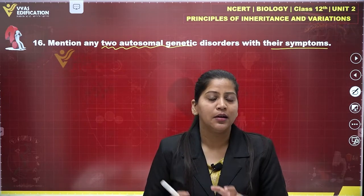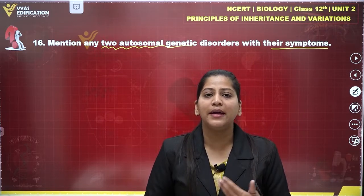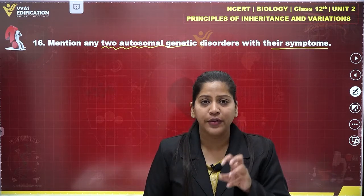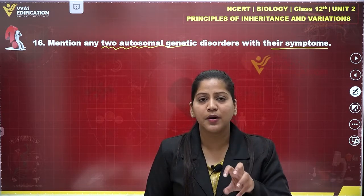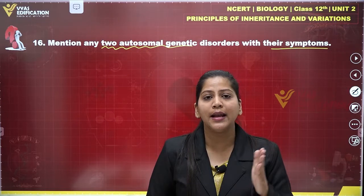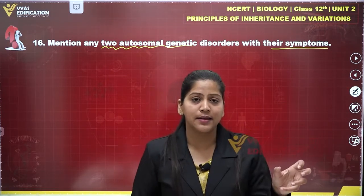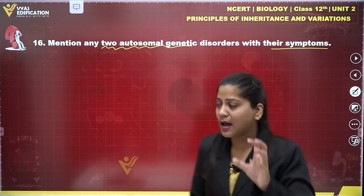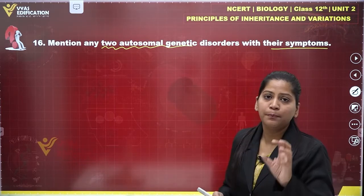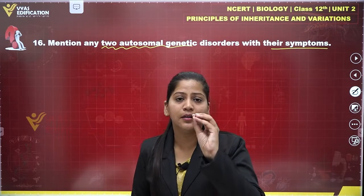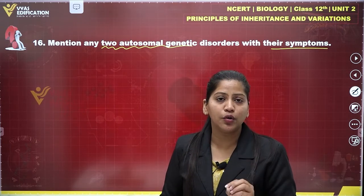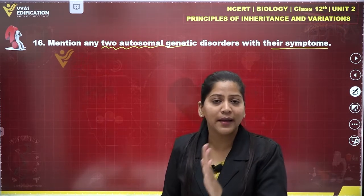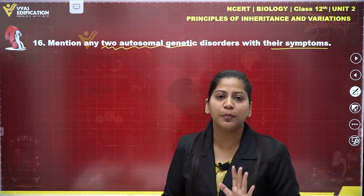The person who has phenylketonuria shows mental retardation because of the accumulation of phenylalanine. The accumulated phenylalanine gets converted into phenylpyruvic acid and its derivatives. Additionally, the affected person shows very poor absorption by their kidneys.